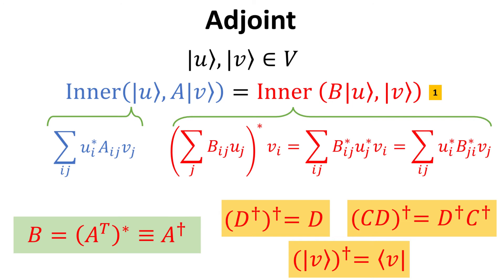It is also straightforward to prove the following adjoint operation rules in the yellow boxes, such as the adjoint of an adjoint recovers the original matrix. The adjoint of the product of C and D matrix yields D adjoint multiplied by C adjoint. We can also extend this operator to vectors, where the adjoint of a ket yields its bra counterpart.